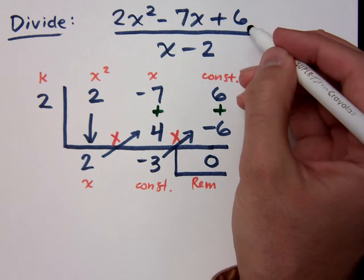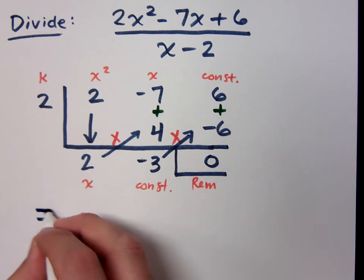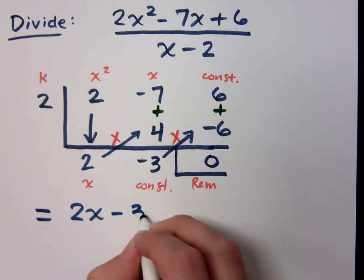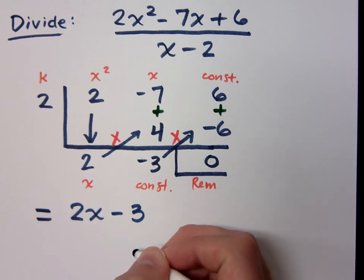So that tells me that this division is equal to what? How would you write your answer? 2x minus 3. You would say 2x minus 3. No remainder, is there? No.